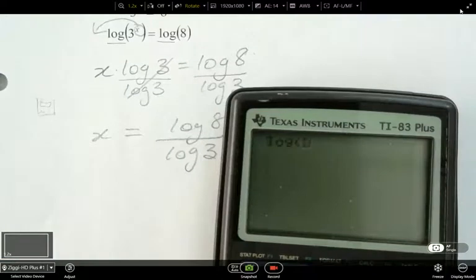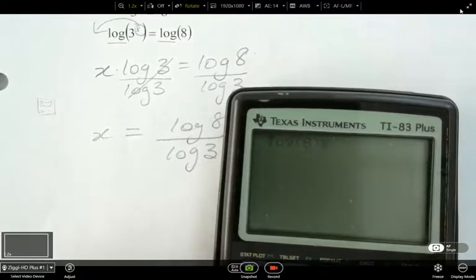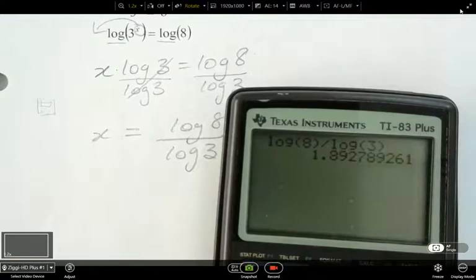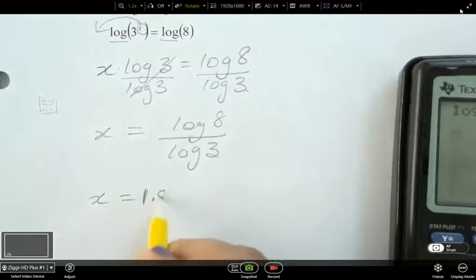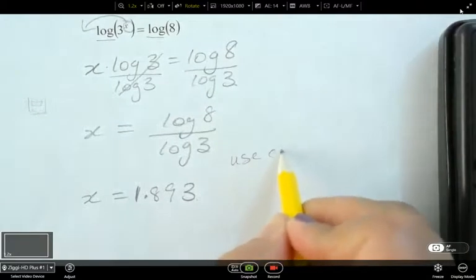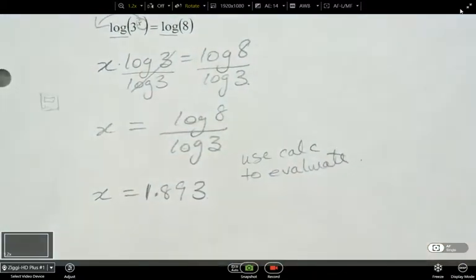So I've got my log and then 8. Make sure you close the bracket there for that log. And then divided by log 3, and close your bracket. So you should end up with 1.8927 and so on. So we can round that to three decimal places, 1.893. So we used our calculator to evaluate.